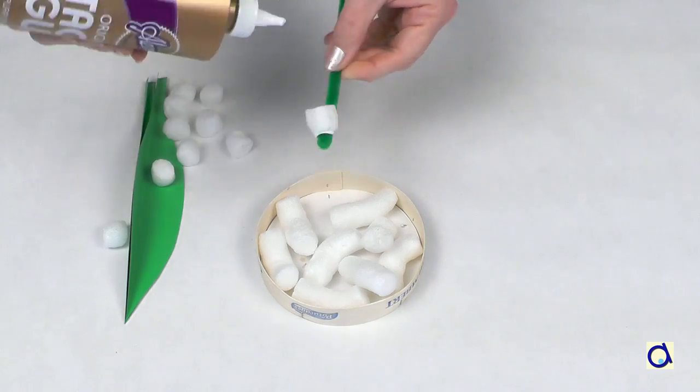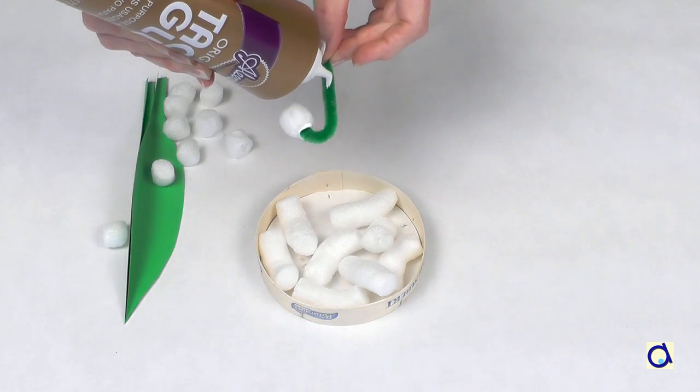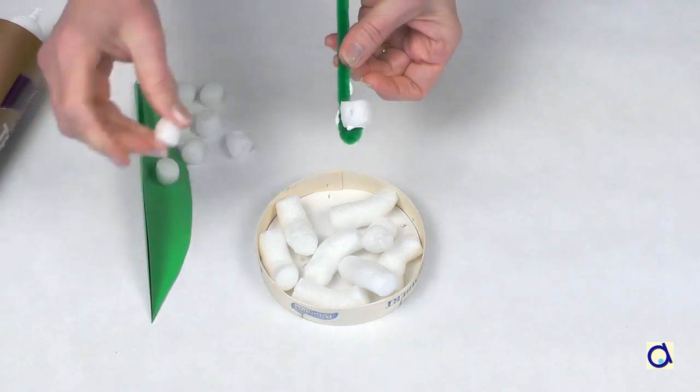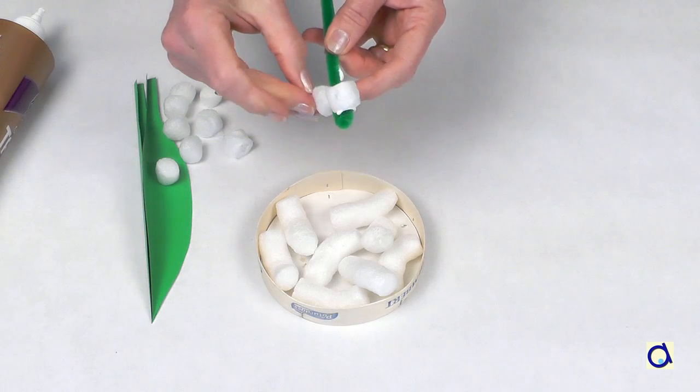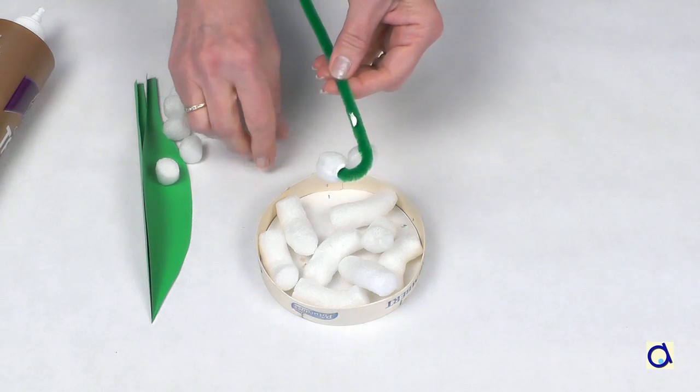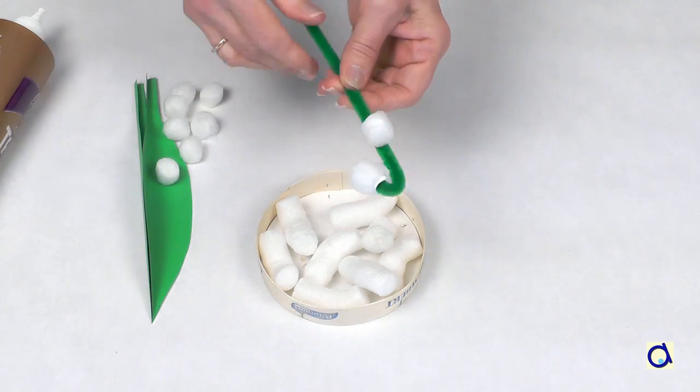Then put other dots of white glue along the pipe cleaner. To make the strand of lily of the valley more realistic, don't place the bells at the same height and stagger them from left to right too.